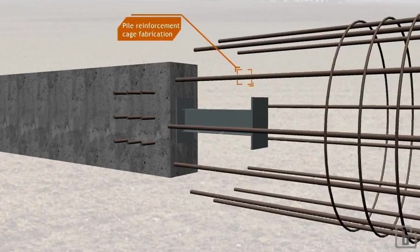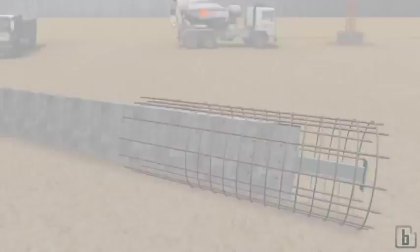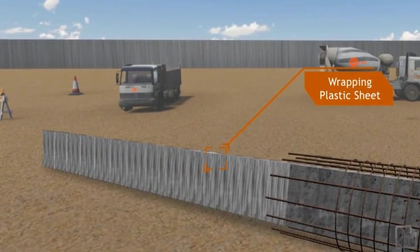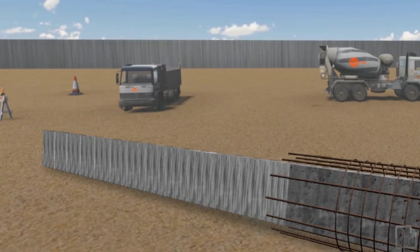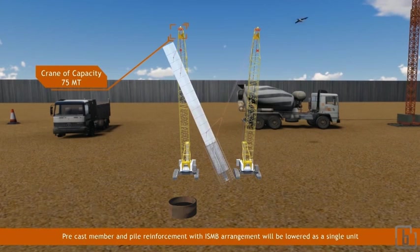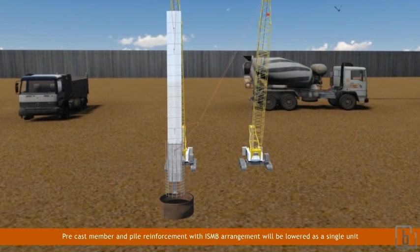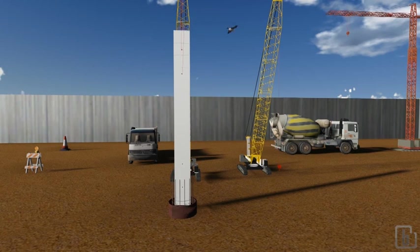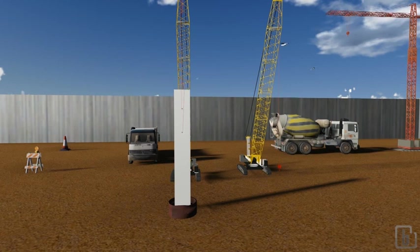Prior to lowering of precast member, it will be wrapped with plastic sheet to have a separation between column and lean concrete which will be poured later. The precast member and pile reinforcement with ISMB arrangement will be lowered as a single unit. During lowering of column, to maintain proper verticality and position of precast member, additional precautionary action of ISMC 150 will be provided at the column corner.